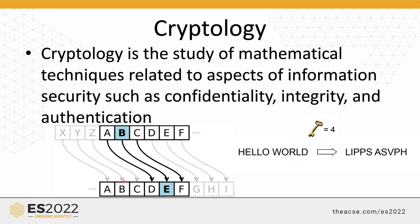Many encryption algorithms have been proposed throughout history to provide information security. The design logic of the Caesar encryption algorithm is based on the principle of shifting letters according to a selected k-value. For example, if k-value is 4, the sentence 'hello world' is encrypted by shifting every symbol 4 positions.